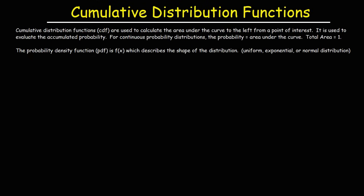These functions are used to calculate the accumulated probability. Keep in mind, whenever you have a continuous probability distribution, the probability is equal to the area under the curve. And since the maximum probability is 1, the total area under the curve will be 1 as well.